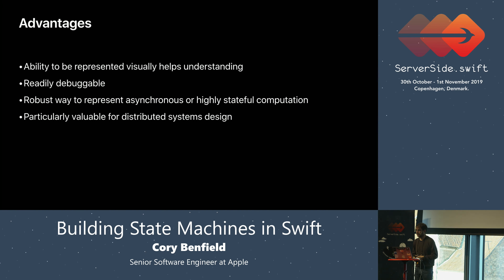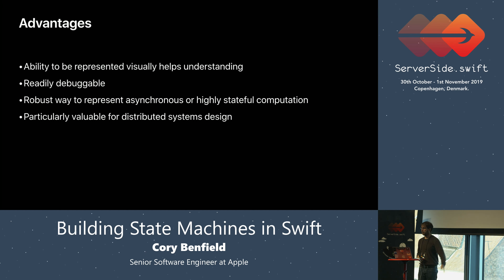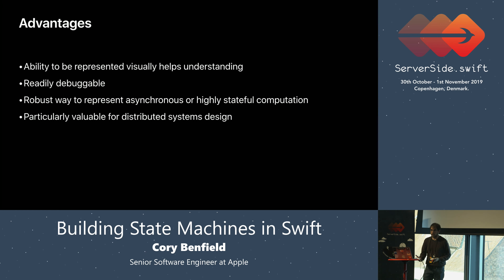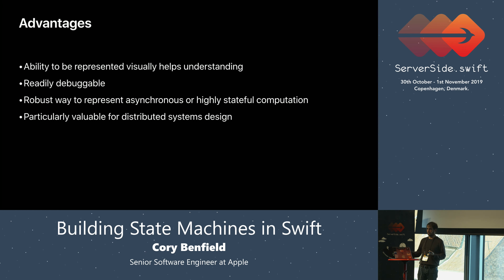The first great advantage of finite state machines is you can represent them visually. If I show you the source code to most Swift NIO programs, I cannot generate from that a bunch of boxes and lines. You have to read the code; if you don't understand one of the lines, it's not clear. But finite state machines can always be represented visually — it's an inherent part of their construction, and the visual representation helps you understand their behavior.